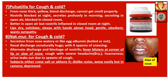Pulsatilla for cough and cold: from the nose, thick yellow bland discharge. Cannot smell properly. Nostrils block at night. Secretion profuse in the morning. Secreting in open air; blocked in closed room. Better in open air but nostrils blocked in a closed room at night. Lips dry and exfoliating. Sleeps with hands above head. Gentle, obedient, and wants sympathy — these are general symptoms of Pulsatilla.